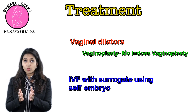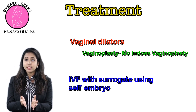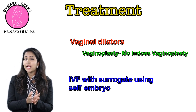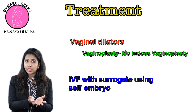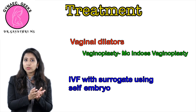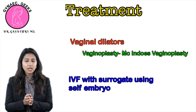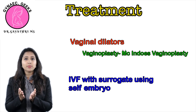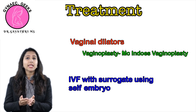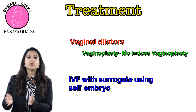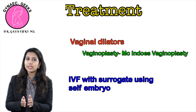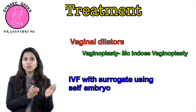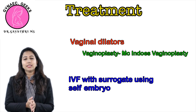As these women have normal ovaries, by taking the egg from the ovary we can go for a surrogate pregnancy in another woman. The baby will therefore be genetically related to the patient herself.